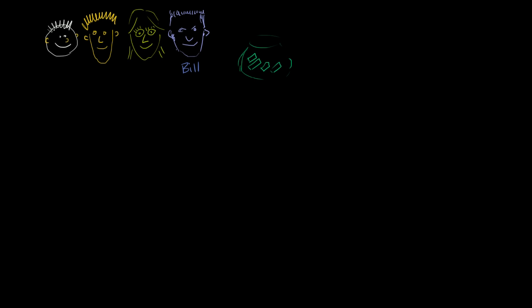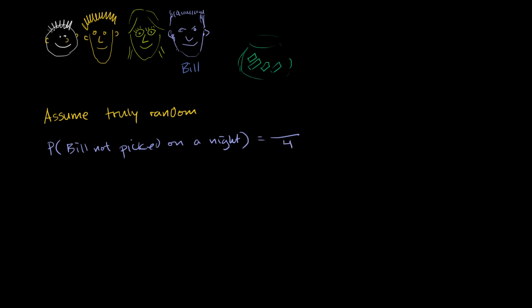Let's think about the probability that Bill's not picked on a given night. We'll assume Bill's not cheating — assume truly random — and that each of the four sheets of paper has a one-in-four chance of being picked. There are four equally likely outcomes and three of them result in Bill not being picked. So there's a three-fourths probability that Bill is not picked on a given night.